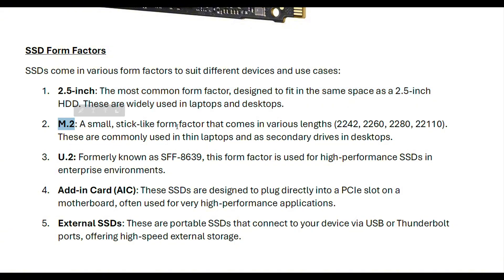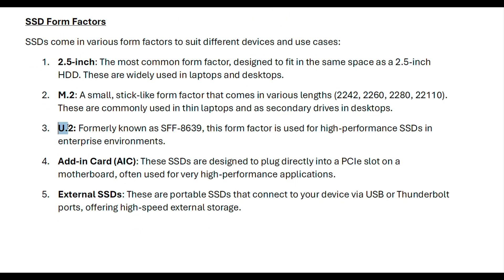M.2 is a smaller stick-like form factor that comes in various lengths: 2242, 2260, and others — these serial numbers indicate the dimensions. These are commonly used in thin laptops and as secondary devices in desktops. The U.2, formerly known as SFF-8639, is used for high-performance SSDs in enterprise and server environments but is not commonly found in consumer desktops and laptops.